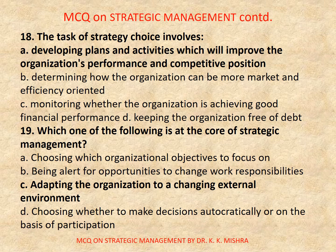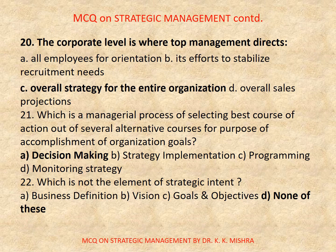Question number 19. Which one of the following is at the core of strategic management? A. Choosing which organizational objectives to focus on, B. Being alert for opportunities to change work responsibilities, C. Adapting the organization to a changing external environment, D. Choosing whether to make decisions autocratically or on the basis of participation. Correct option is C. Adapting the organization to a changing external environment. Question number 20. The corporate level is where top management directs: A. All employees for orientation, B. Its efforts to stabilize recruitment needs, C. Overall strategy for the entire organization, D. Overall sales projections. Correct option is C. Overall strategy for the entire organization.